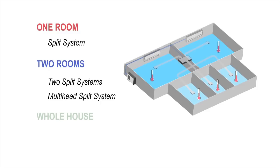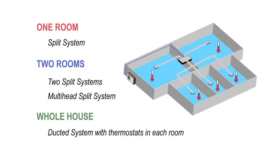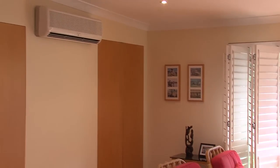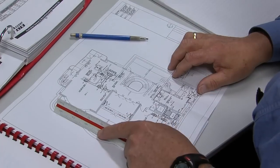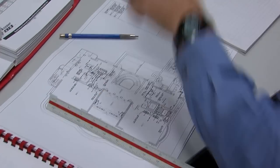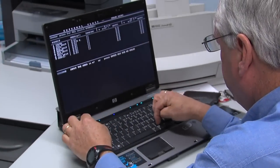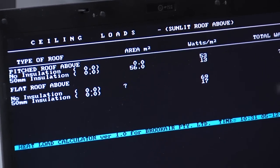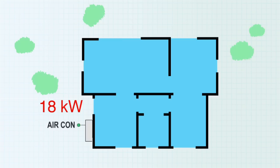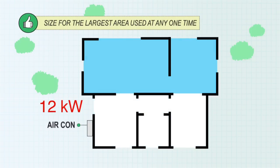For whole house conditioning, ducted systems which use thermostats in each room have superior efficiency and comfort over standard ducted systems. Correct sizing of air conditioners is critical. This must be based on the output capacity, usually in kilowatts, not horsepower or electrical input. Use a heat load calculator, which takes the thermal performance of the building into account. With ducted systems, don't size for the whole house — size for the largest area that will be cooled or heated at any one time.